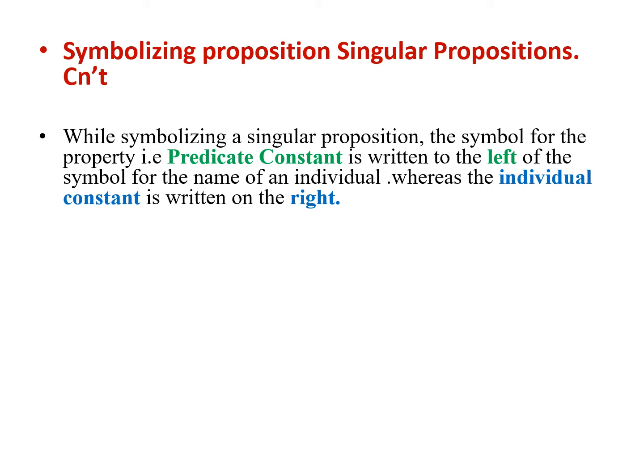While symbolizing a singular proposition, we have to keep in mind that the symbol used for the property — that is, the predicate constant — is always written on the left hand side of the symbol for the name of the individual, that is the individual constant. So predicate constant is written on the left hand side, and individual constant is written on the right hand side.